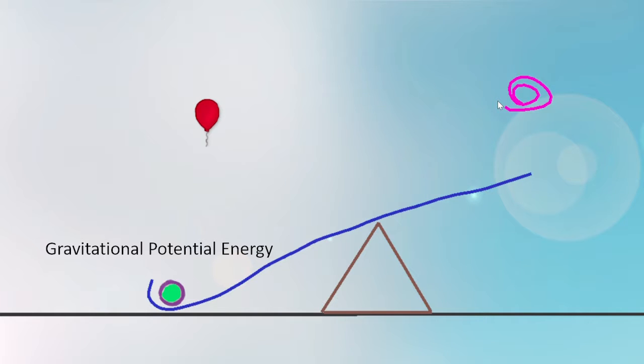Gravitational potential energy, or GPE, is the energy of height. The ball begins with no height, so it has no GPE.